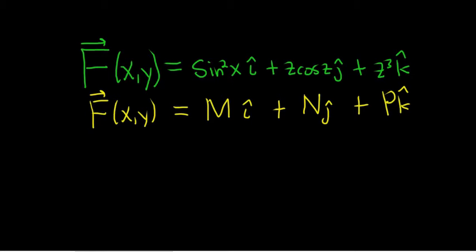the formula for the divergence, so we write div of our vector field F(x,y), is del M del x. Really easy to remember, right, because the first one is like your x kind of,